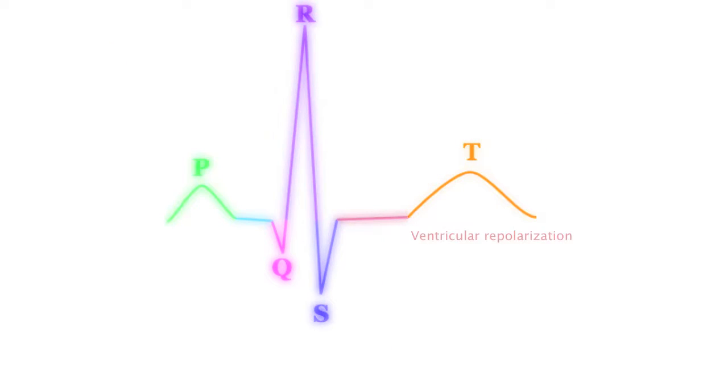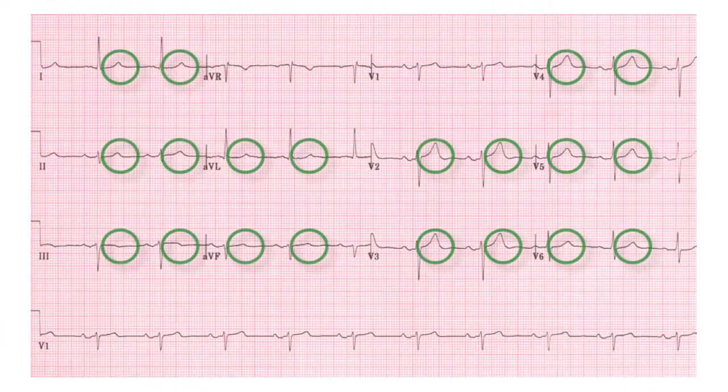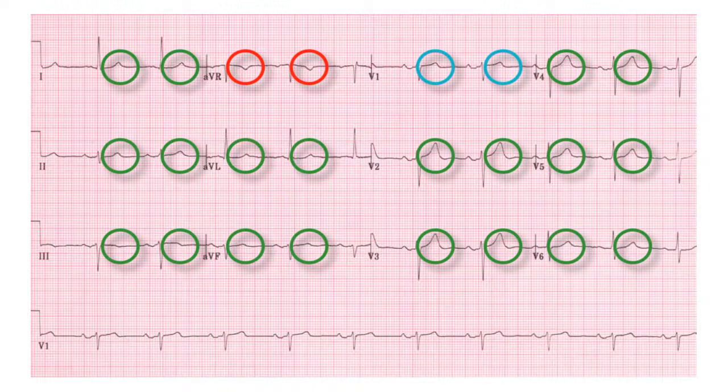The T wave represents ventricular repolarization. On a normal EKG, it is always positive, except in AVR where it is negative, and in V1 where it may be positive, negative, or biphasic.